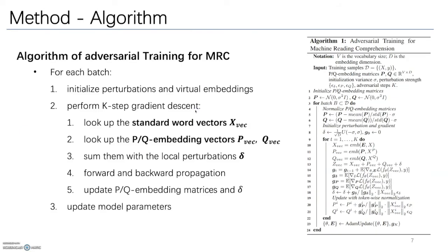This is the complete algorithm of the adversarial training for MRC. This algorithm combines both AT and PQAT. For each batch, we first initialize perturbations and virtual embeddings, and then perform k-step gradient descent.